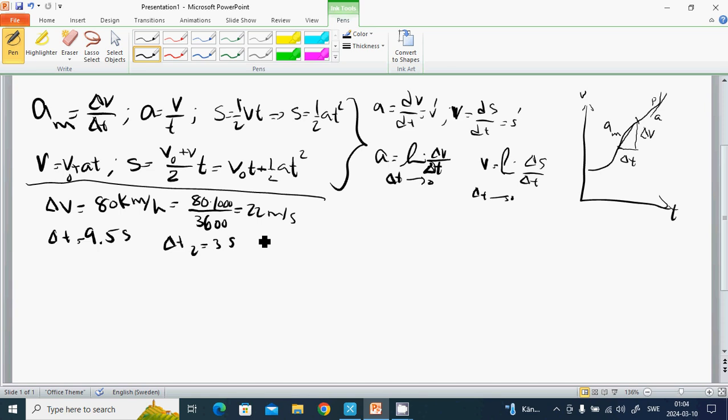What is the average acceleration? The first delta aₘ₁ equals 22 divided by 9.5, which is 2.3 meters per second squared. And delta aₘ₂ is from minus 22, divided by 3, which is minus 7.3 meters per second squared.